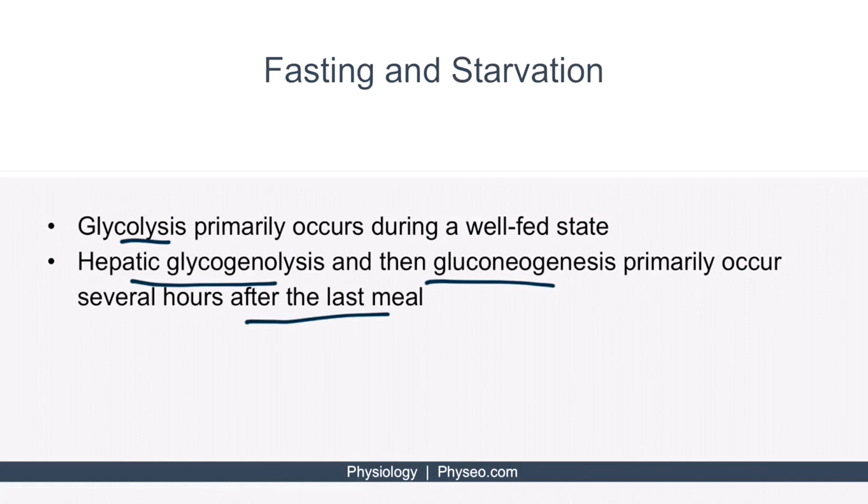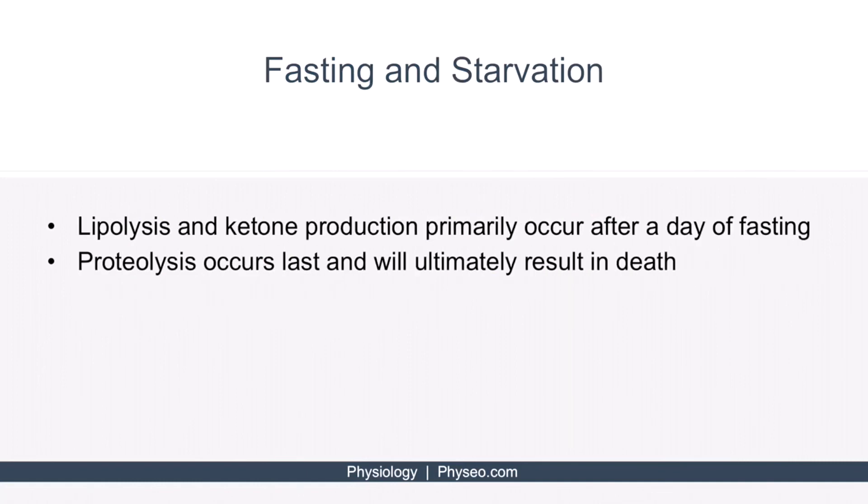Do you know what other organ, in addition to the liver, participates in gluconeogenesis? The kidney. A day after the last meal, lipolysis and ketone production begins to kick in. And finally, proteolysis occurs after about a week of fasting. If nutrition continues to be withheld, then massive proteolysis will eventually result in death. Understanding what metabolic pathway predominates at what time during starvation is important and high yield for step one.